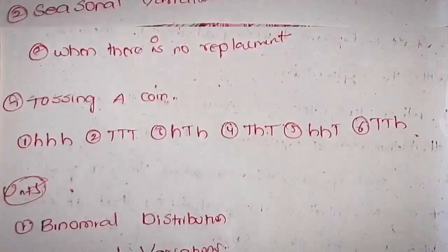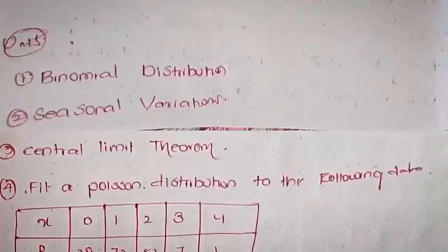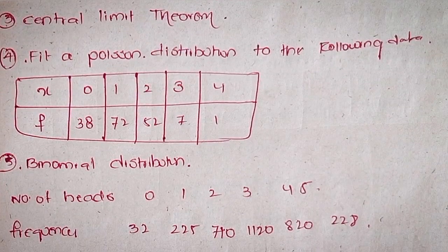Unit 5: Theoretical Distributions — important questions. First, binomial distribution. Second, seasonal variation. Third, central limit theorem. Fourth, fit a Poisson distribution to the following data. X values: 0, 1, 2, 3, 4. Frequency values: 38, 72, 52, 7, 1.